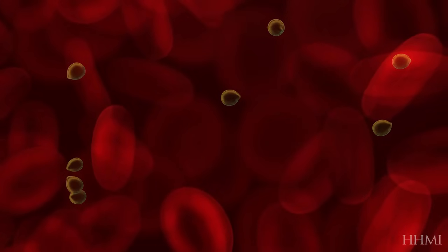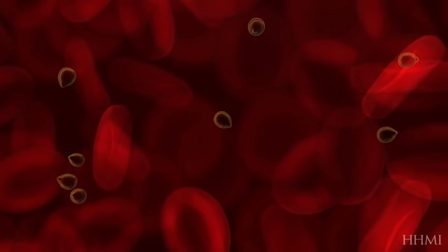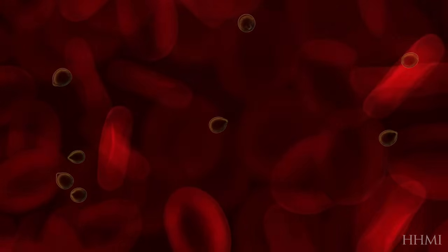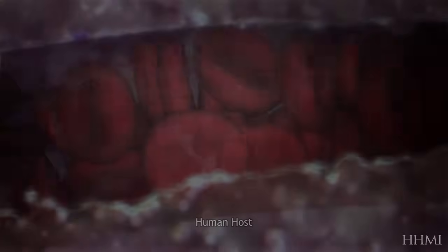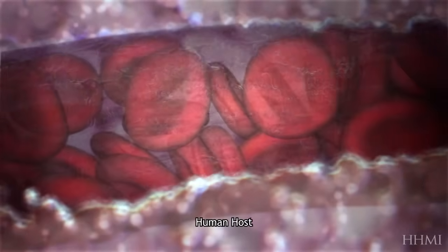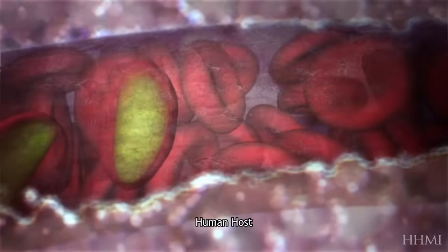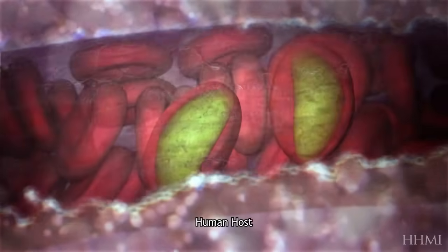The parasite form that is deadly inside humans cannot survive in the mosquito's stomach, and is slowly digested with the rest of her blood meal. However, back in the human host, a few of the parasites turned into a different type of cell, one that is sexual but remains dormant.